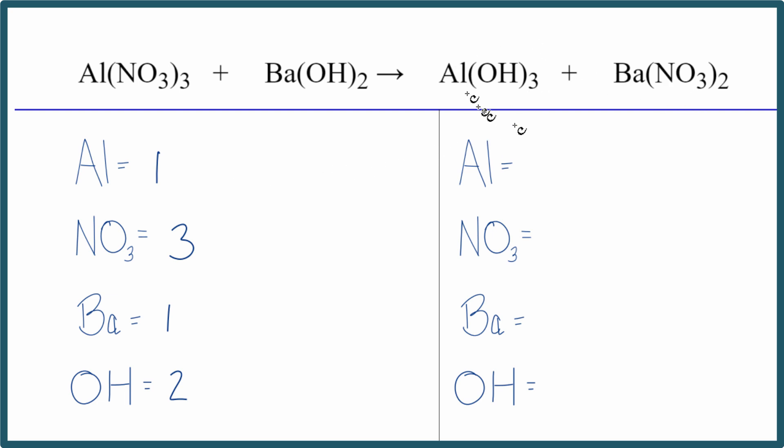On the product side, we have one aluminum, one times two, so two nitrates, one barium, and then one hydroxide times three.